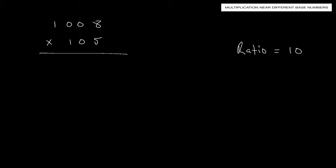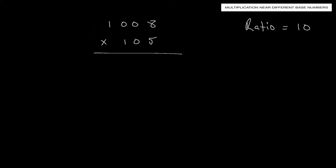The next step is to separate the answer into a left-hand side and a right-hand side. We find the difference between each base number and the numbers we're multiplying: 1,008 is positive 8 away from 1,000, and 105 is positive 5 away from 100. These are the excesses from the base.